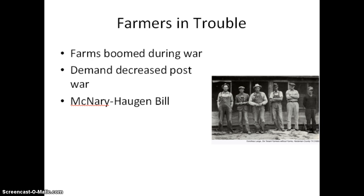The McNary-Haugen bill would have had the government buy surplus crops at higher prices. They would then sell the crops at lower prices and tax domestic food sales to make up the difference. This bill was passed twice by Congress to help farmers, but twice vetoed by President Coolidge.